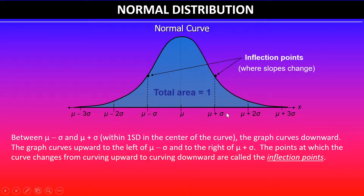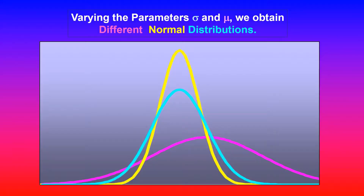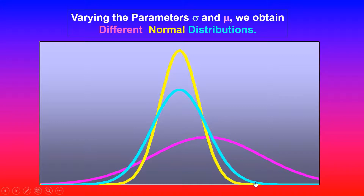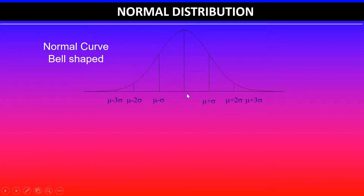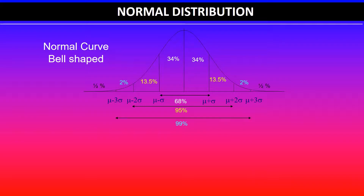We can obtain different normal distributions by varying the parameters — mean and standard deviation. Remember, standard deviation is the measure of spread, so a bigger spread gives a smaller peak, and a smaller spread gives a bigger peak, as the total area must remain one. Within the first standard deviation we have 68% of the data, within two standard deviations approximately 95% of the data, and within three standard deviations of the mean approximately 99% of the data.